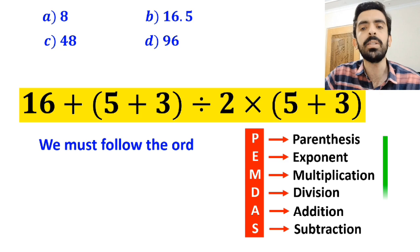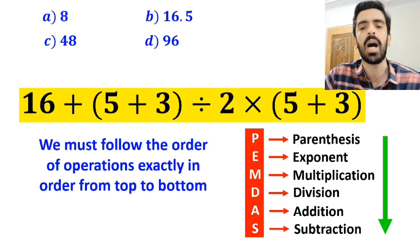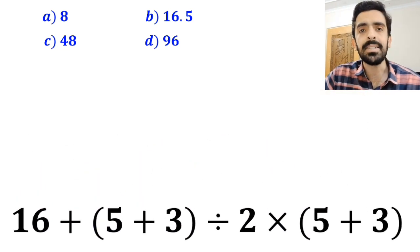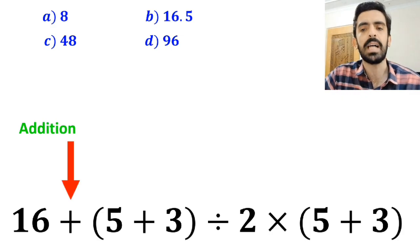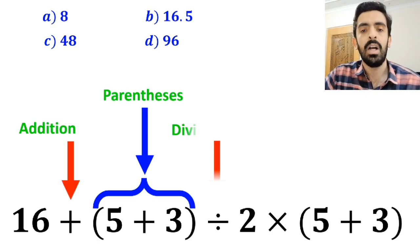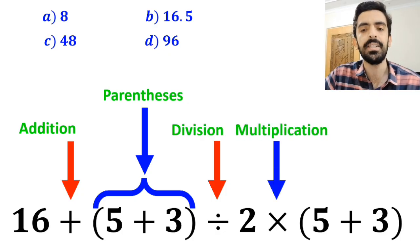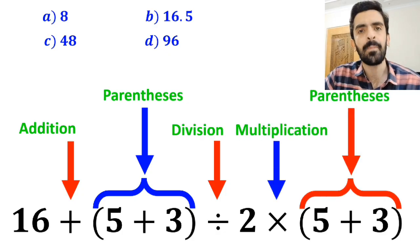We must follow the order of operations exactly in order from top to bottom. As you can see in the image, in this expression, first we have an addition sign, then parenthesis, followed by a division sign, after that we have a multiplication sign, and finally another parenthesis.